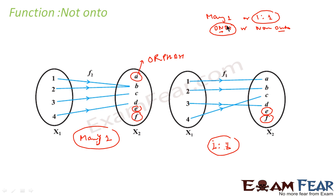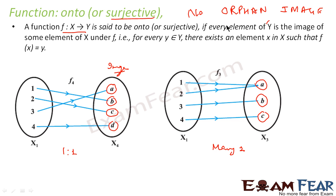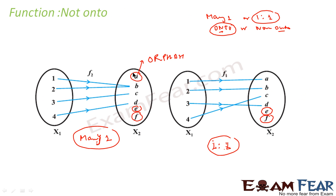That kind of function is called a bijective function. Now, the memory tip for onto function: onto function is also called surjective function. From the word 'surjective' you can extract 'sir' — sir means lord, like God. If God is there, nobody is orphan. So if there is no orphan element in the image, it is a surjective function. If God is not there, then there are orphan elements — that is, it is not surjective. Just a memory tip!